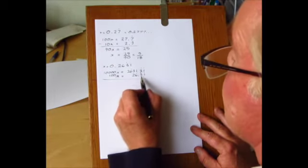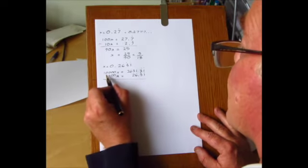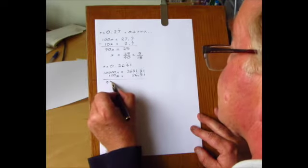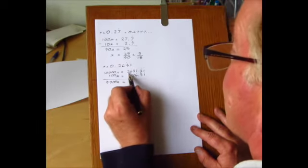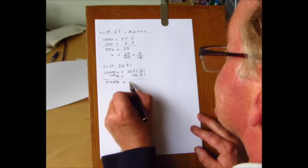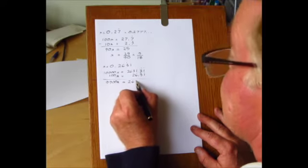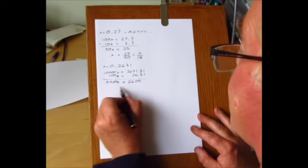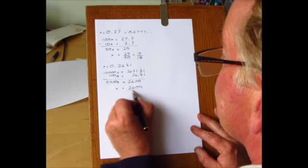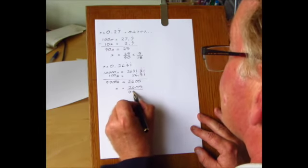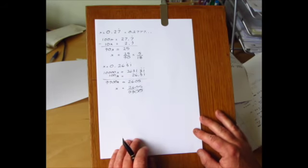And then we subtract. On the left that would be 9,900X, and on the right, subtracting these two numbers, we have 2631 minus 26 is 2605. So X is equal to 2605 over 9,900, and that can be cancelled down to lowest terms as well.